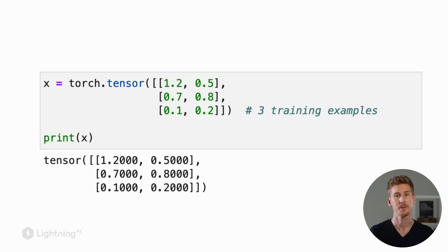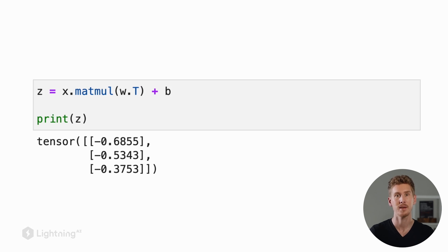We just saw how we compute the net input for a single training example. However, you might now wonder how does the linear layer handle mini-batches? Suppose here we have a mini-batch consisting of three training examples with two features each. To compute the net input or weighted sum here, we would do matmul on x and the transpose of the weight vector, as we covered in a previous lecture on matrix multiplication.